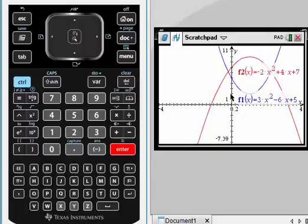Now I'm going to show you how to find a point or points of intersection between two curves. I plotted F1 of X as 3X squared minus 6X plus 5 and F2 is negative 2X squared plus 4X plus 7.